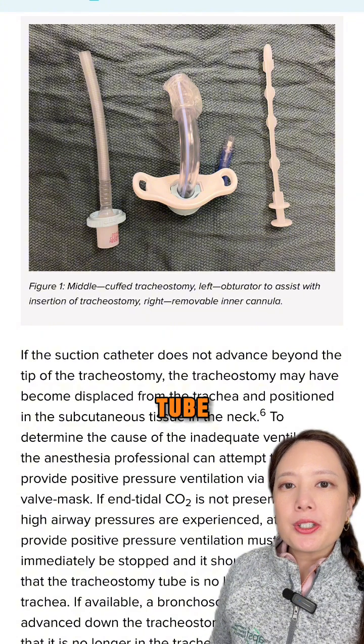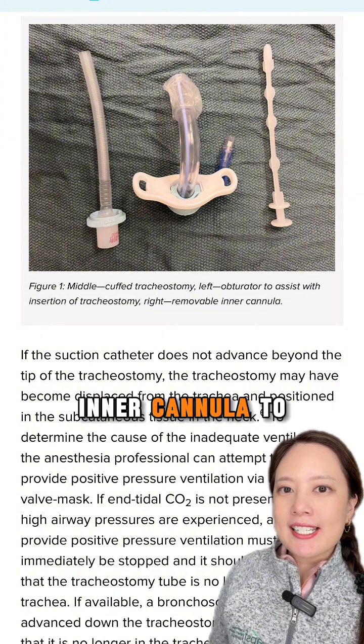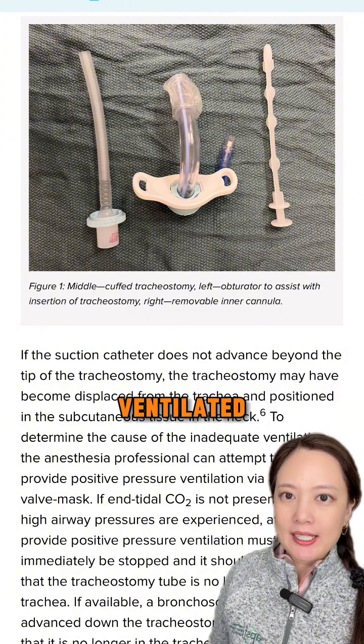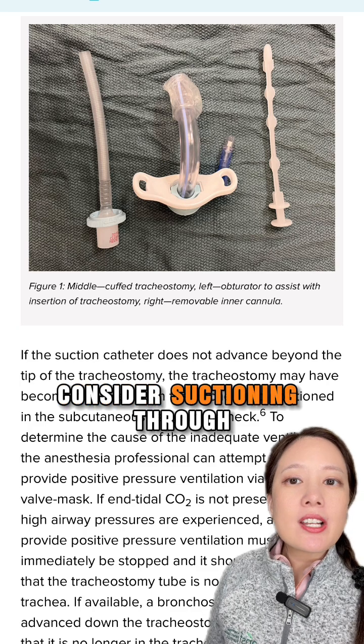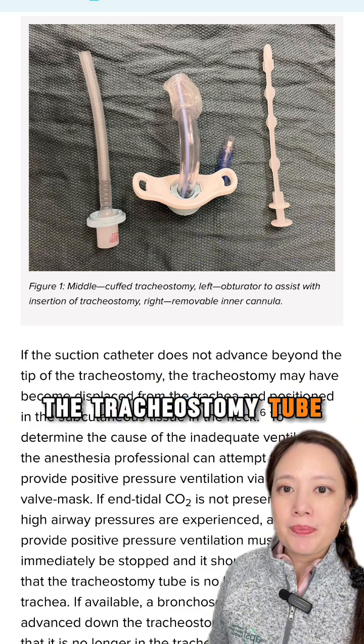For an occluded tube, try removing the inner cannula to see if the patient can be ventilated. If not, then consider suctioning through the tracheostomy tube.